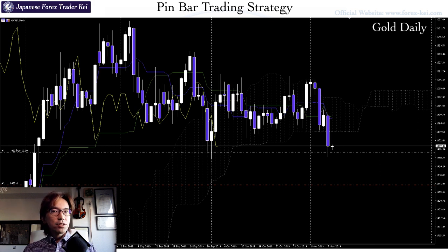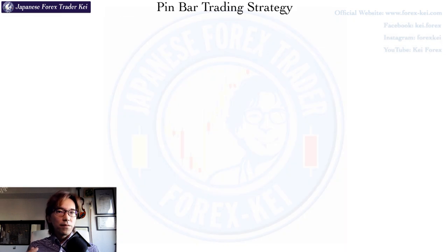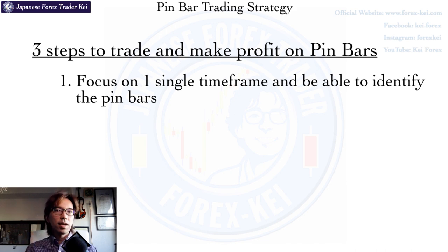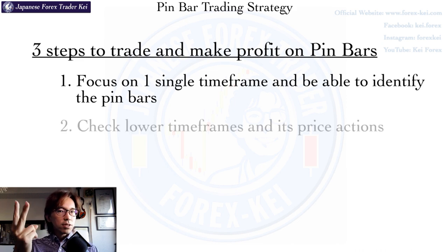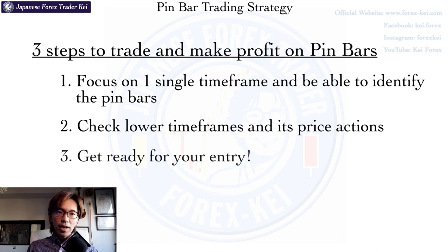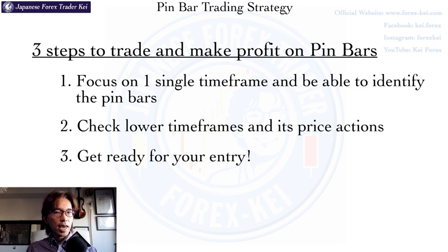So you see how I combine these price actions with multiple timeframes and trade with a great risk-to-reward ratio. With these examples in GBP/Y and gold, make sure you watch this video and fully understand what I'm saying, and try to increase your trade accuracy using price action trading techniques. The first step is to focus on a single timeframe, look back at past charts, and practice identifying where pin bars are until you can spot them instantly. Once you're used to that, take a closer look at pin bars using lower timeframes and see if you can find additional price action confirmation — so that when it happens in the live market, you can place the best position with low risk and high return.